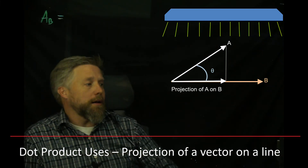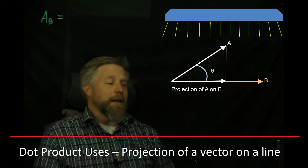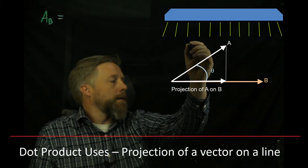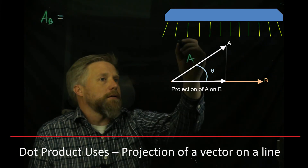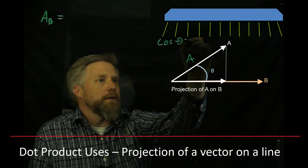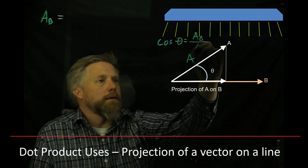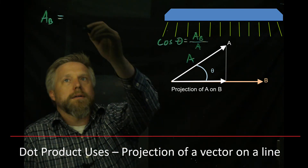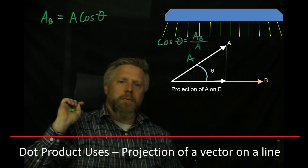If you were doing this with trigonometry, you'd use SOHCAHTOA. Since the projection is adjacent to the angle, if |A| is the magnitude of our vector, then cosine of theta equals the projection of A onto B divided by the magnitude of A. Solving for the projection of A onto B gives us A cosine theta.